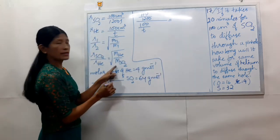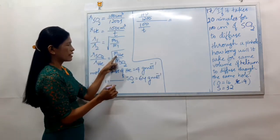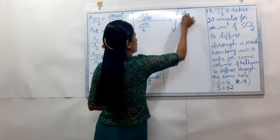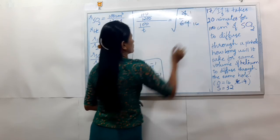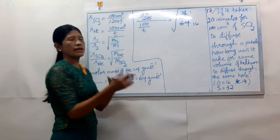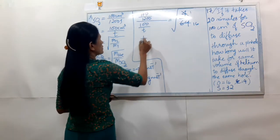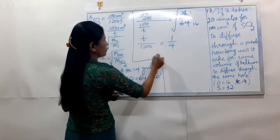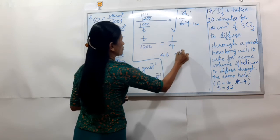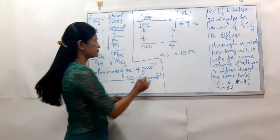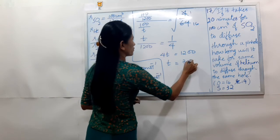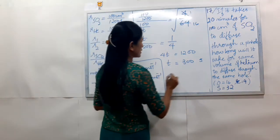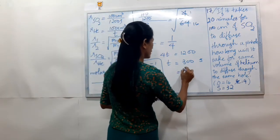So here we go. R is 4, M-SO2 is only 64. 4 and 64. D equals 1200. D equals 300 seconds. In 300 seconds — that's 5 minutes.